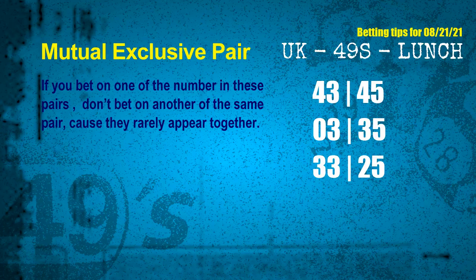These numbers in a pair both match the following ones and colors, but according to thousands of results before, they rarely appear together — which means if you bet on one of them, don't bet on another in the same pair. The mutual-exclusive pairs for next draw are: first pair 43 and 45, second pair 03 and 35, third pair 33 and 25.